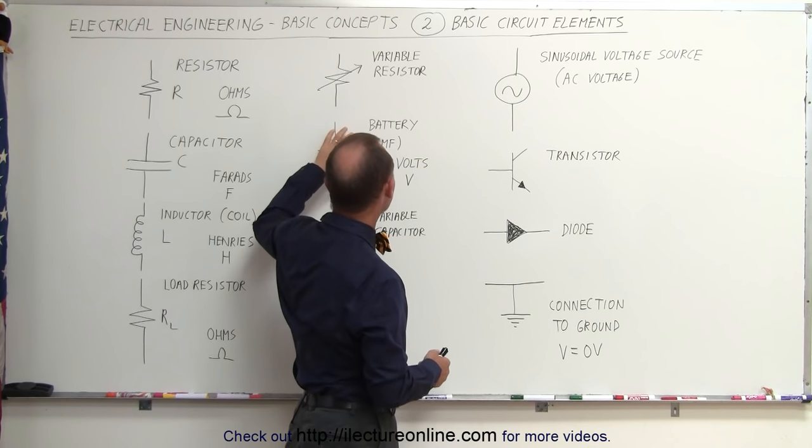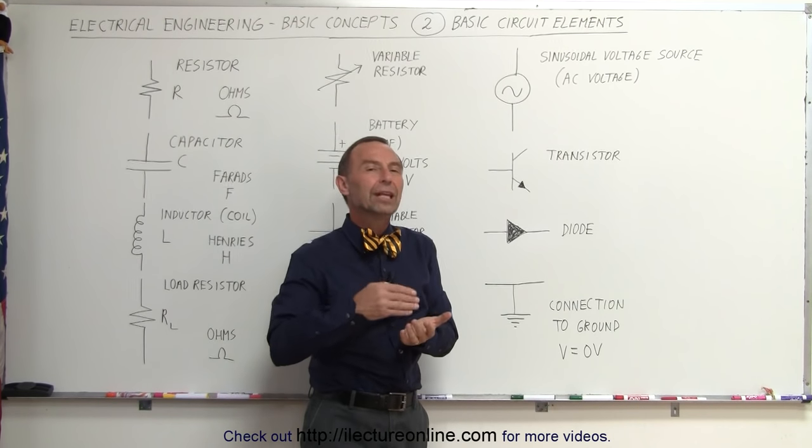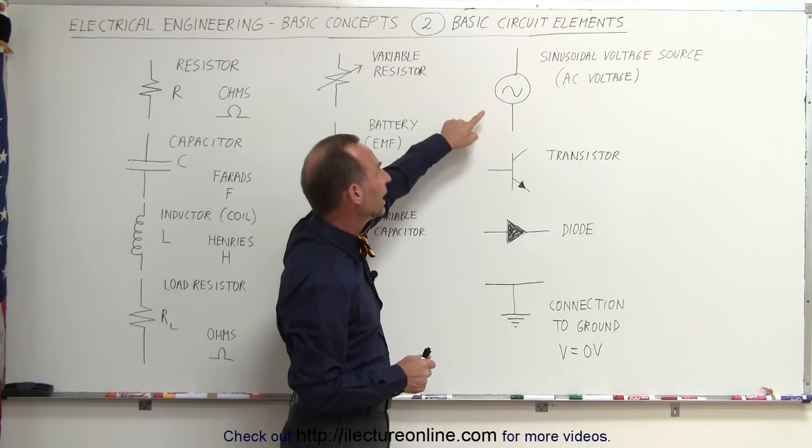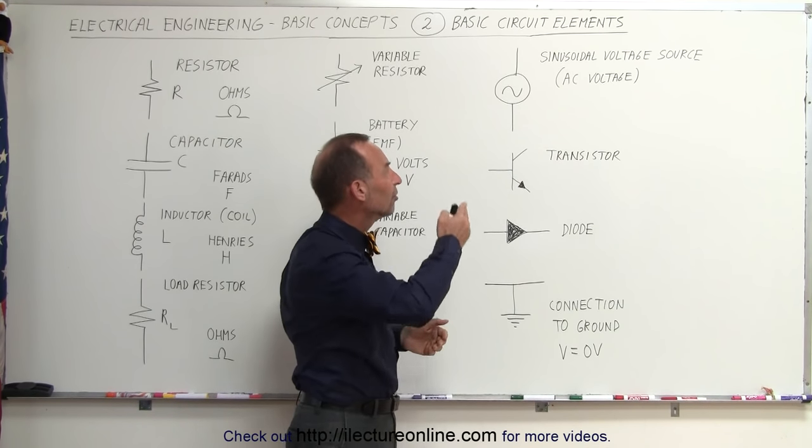Some other things that we need to know is sometimes we have not just a steady state, or direct current voltage source, sometimes we have an alternating current voltage source. An alternating current voltage source produces an alternating voltage. It increases, decreases, goes negative.